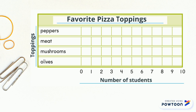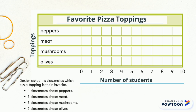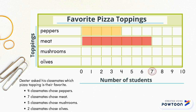We will shade the bar graph according to the information we got from the example. First bar: peppers. Four classmates chose peppers, so we will color the bar up to the number four. Then meat — seven classmates chose meat, so we will color the bar graph up to the number seven.